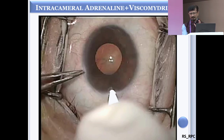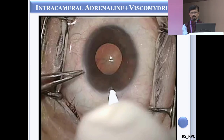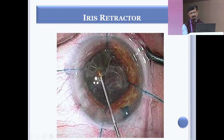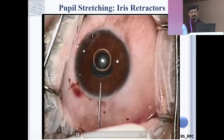Sometimes the pupil doesn't dilate and you require gadgets — sometimes these pupils are non-dilating. So we should focus on how to manage nucleus in a non-dilating pupil, because small pupils can get enlarged by pharmacologic agents. The most important gadget people use is the iris retractor. Most commonly, people use four iris retractors through side ports, with the main incision through which the probe goes inside.